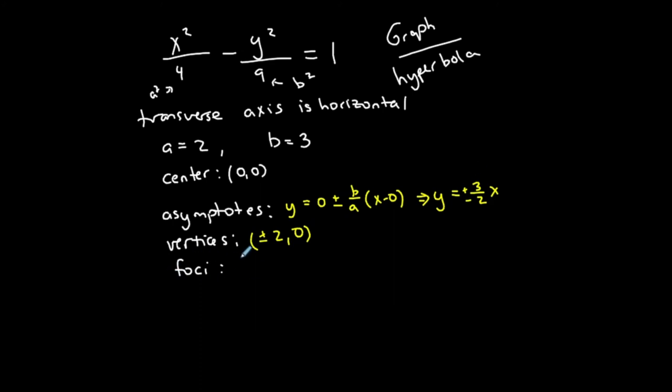Now I'm not done because you could be asked for both sides or the ordered pair for each focus. And there's a relationship between a, b, and c. a squared plus b squared is c squared.